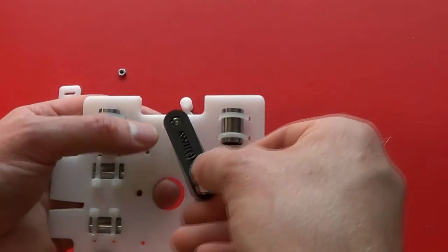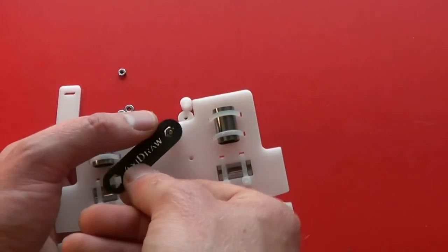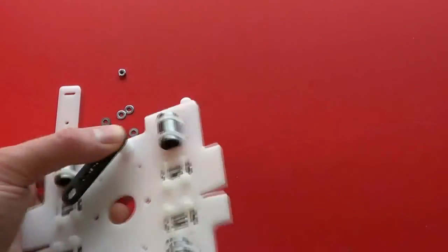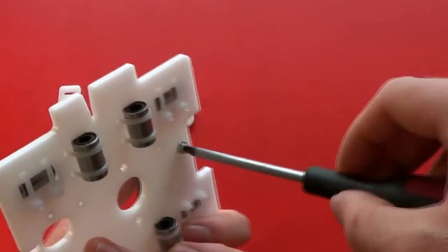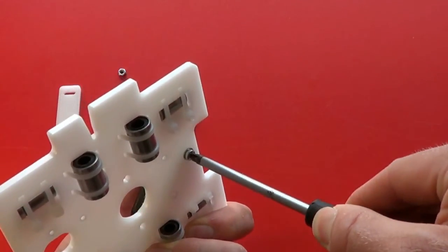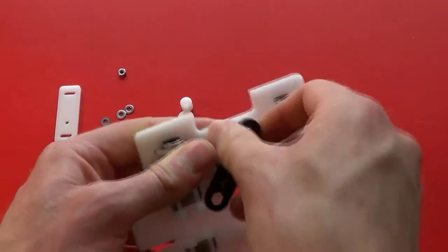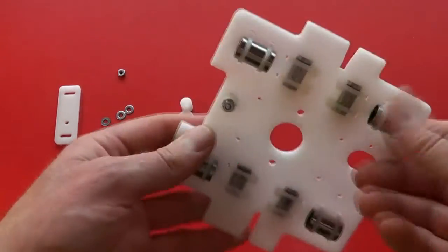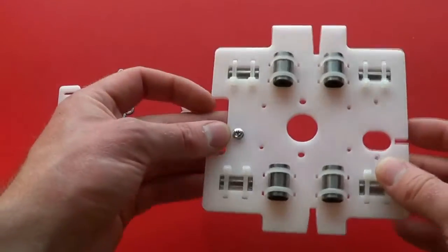Tighten that using the small end of the spanner and the posi drive number 1 screwdriver. So that's the left anchor post into place.